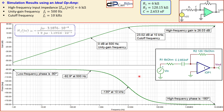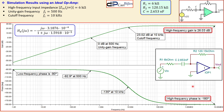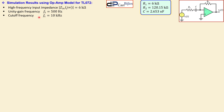The Bode plot with the ideal op amp shows the high-frequency gain at 26.03 dB (which is 20·log(R2/R1)), with a phase of −180 degrees at high frequency consistent with an inverting amplifier. The cutoff frequency is confirmed at 10 kHz (3.01 dB down from the passband), and the unity gain frequency is confirmed at 500 Hz (0 dB). All specifications are verified in the ideal op amp case.